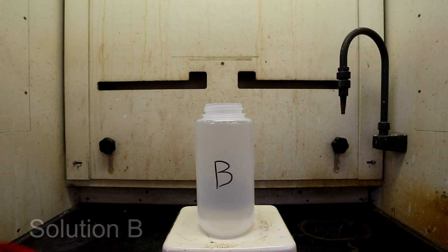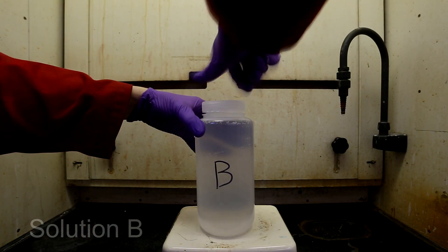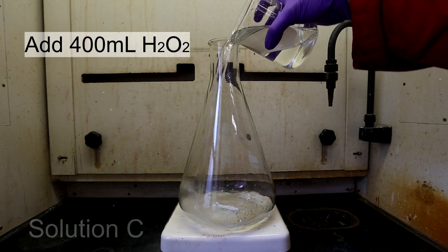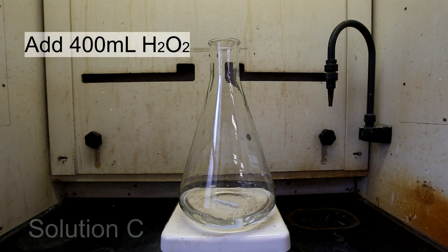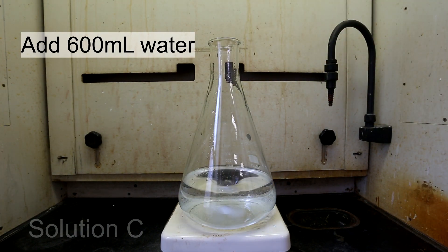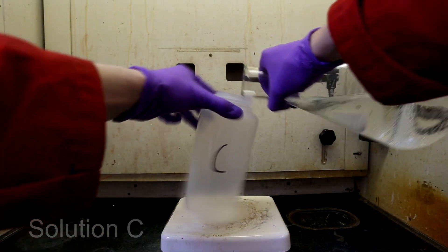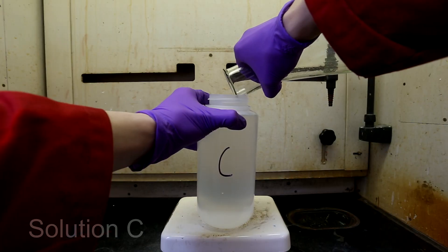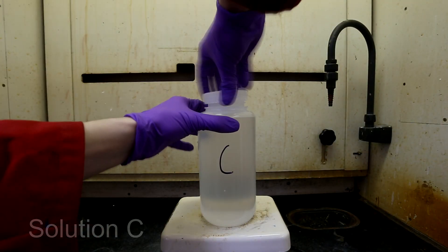Now, put this solution aside and we'll move on to making the last and easiest one. First, add 400 milliliters of 30% hydrogen peroxide. Top this off to 1 liter using about 600 milliliters of water. Mix it thoroughly and then add it to a container labeled C. Now that all the solutions have been made, we are ready to move on to the demonstration.